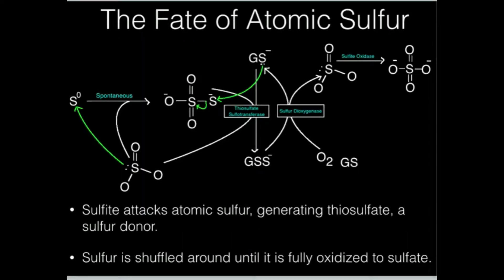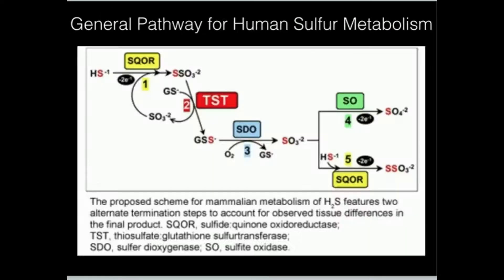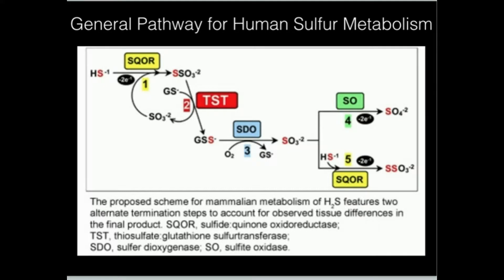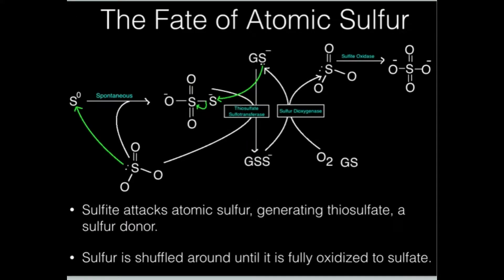In the previous video I went over some cool reactions that are recently elucidated in humans — specifically how we can deal with and metabolize hydrogen sulfide. We actually get inorganic atomic sulfur, and I showed you how we can transform that into the most usable form of sulfur in humans, which is sulfate.